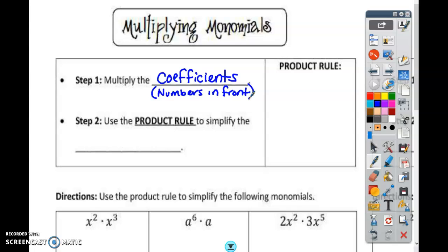And then you're going to use the product rule to simplify the monomial. So the exponents, we will add. We're going to be adding the exponents.